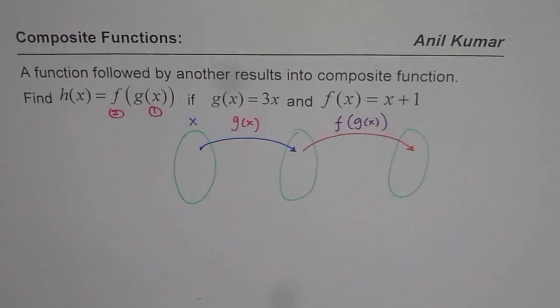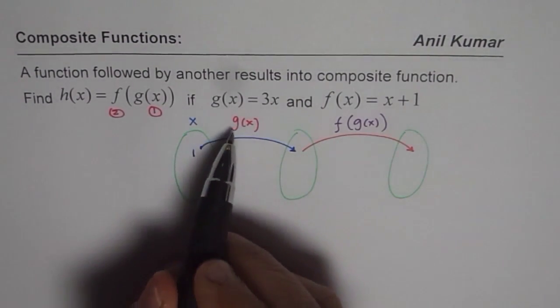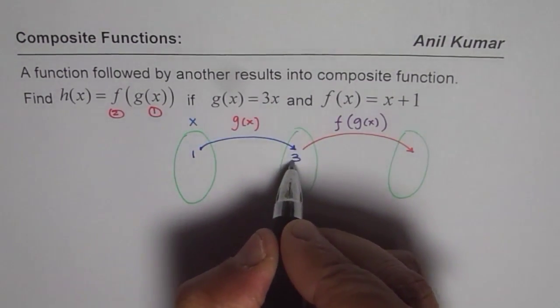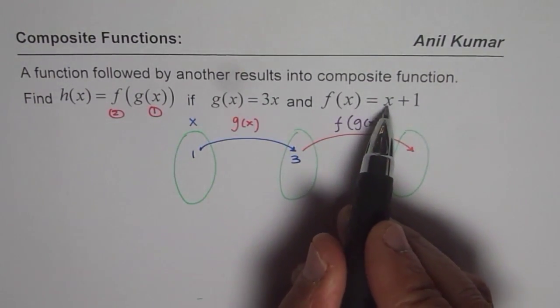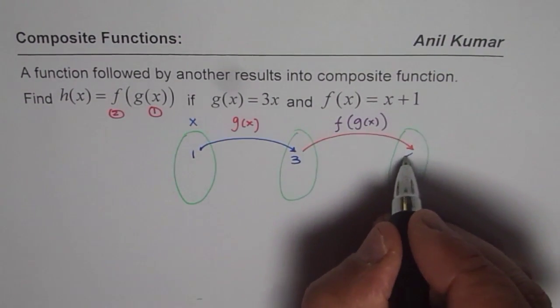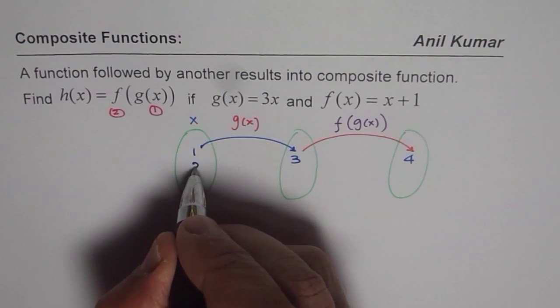Now let us take some values and work it out. Let's say the value for us is 1. g(x) is 3 times 1, so we get 3 here. f(x) is x + 1, so whatever is in the domain you have to add 1, you get 4.